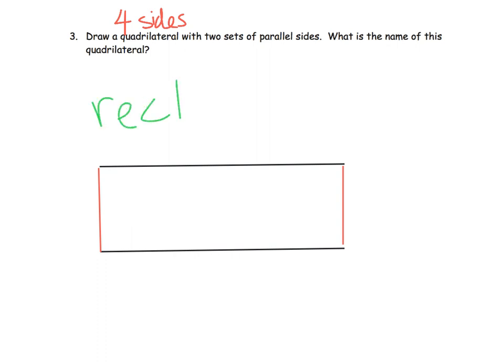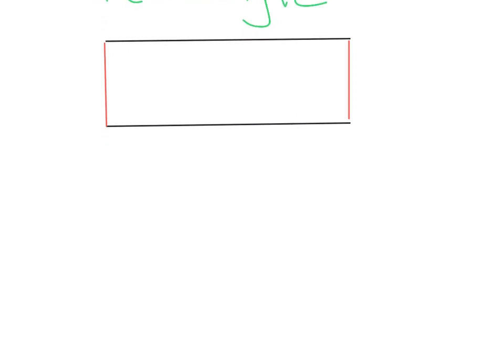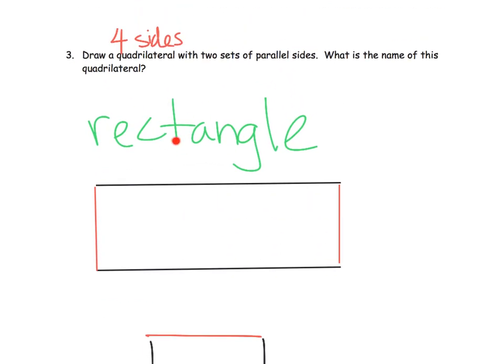What's the name of this special quadrilateral? It's a rectangle. Now parents and teachers — we did not have to create a rectangle. We could have ended up creating a shape that has two sets of parallel sides that is a square. So we could have made a square, but in this case we definitely made a rectangle.